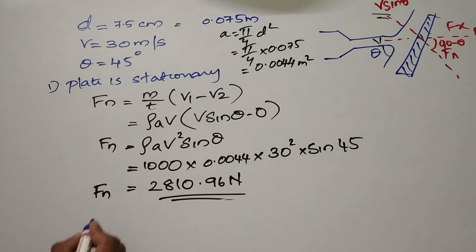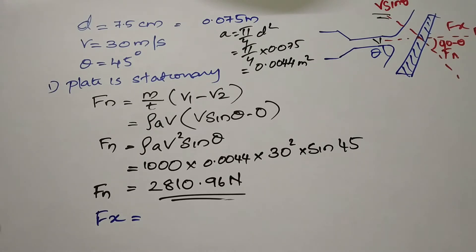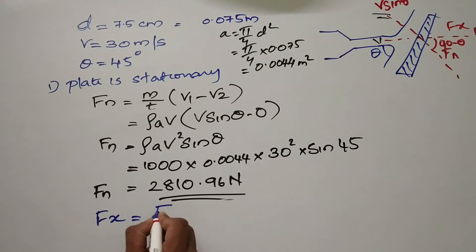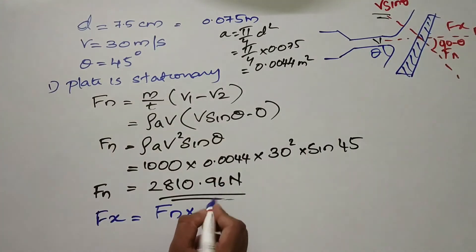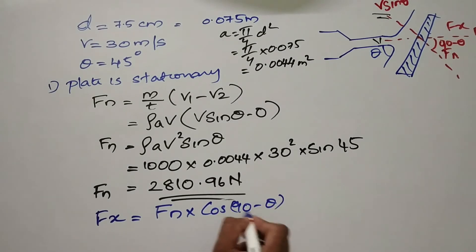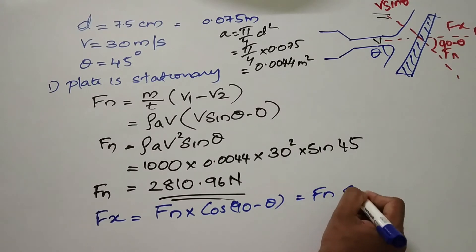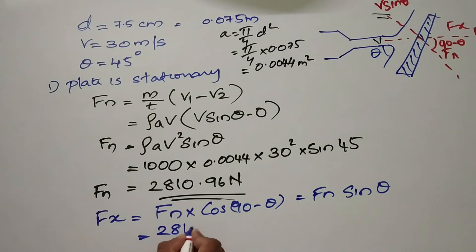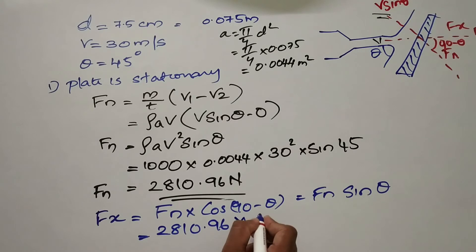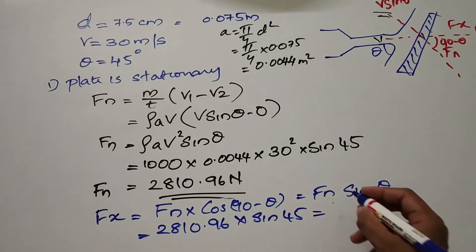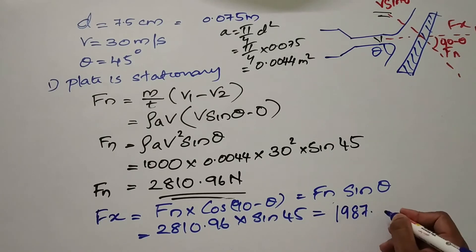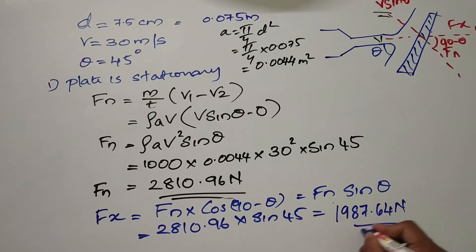Now we have F of N. We also need F of X. F of X equals F of N into cos(90 minus theta), which is F of N sin theta. So F of X equals 2810.96 into sin 45, giving us 1987.64 Newtons. That is the result for the first case.